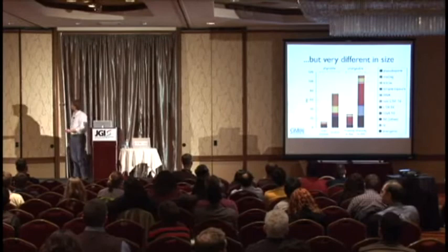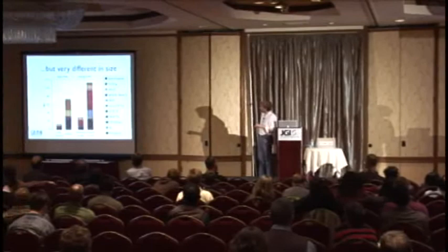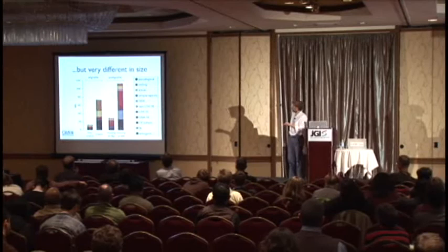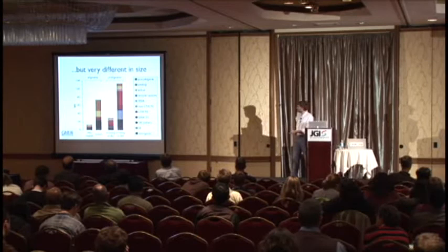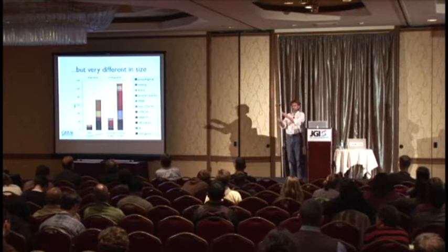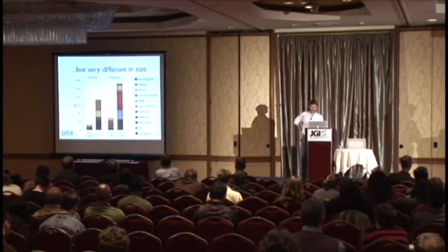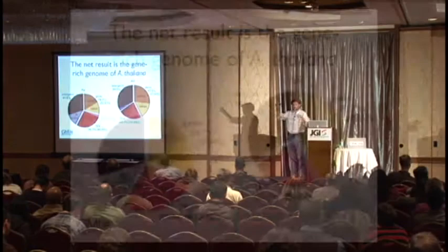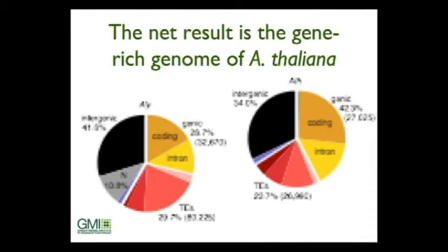What are these unalignable bits? The black portions are intergenic DNA — stuff we don't know what it is — and transposable elements. The things you can align are mostly coding DNA. Regardless of which comparison you do, whether looking at bits missing from one or the other, it's mostly transposable elements and intergenic DNA that you can't align.